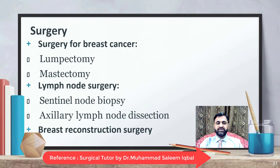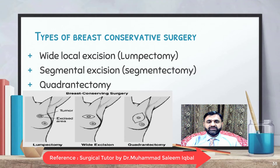Surgery for breast cancer may be lumpectomy or mastectomy. Lymph node surgery may include sentinel lymph node biopsy or axillary lymph node dissection, along with breast reconstructive surgery. Wide local excision or lumpectomy involves removal of the tumor with 1 cm macroscopic margin of clearance. Segmentectomy involves a 1 cm margin with tissue incorporated from the nipple to the periphery of the breast. Quadrantectomy is similar to segmental excision but with a 2 to 3 cm margin of clearance.